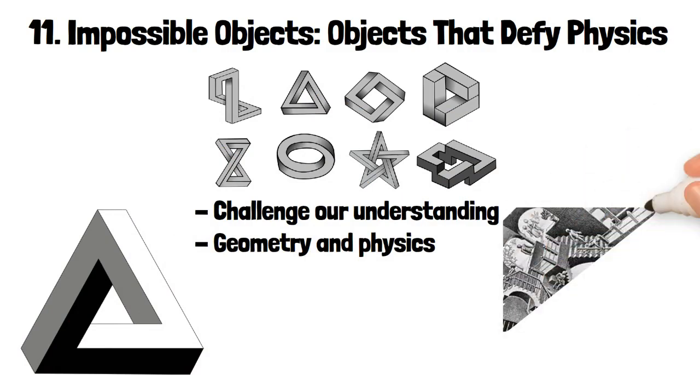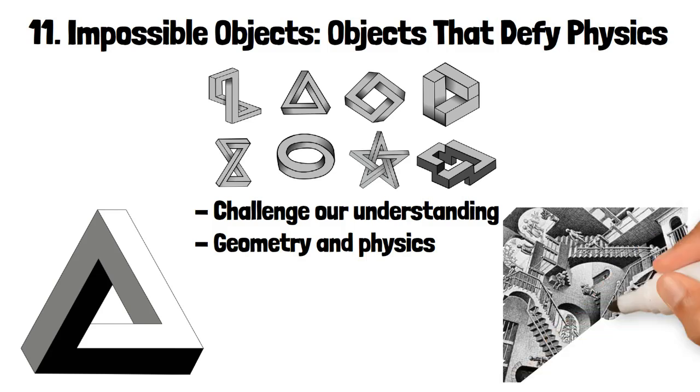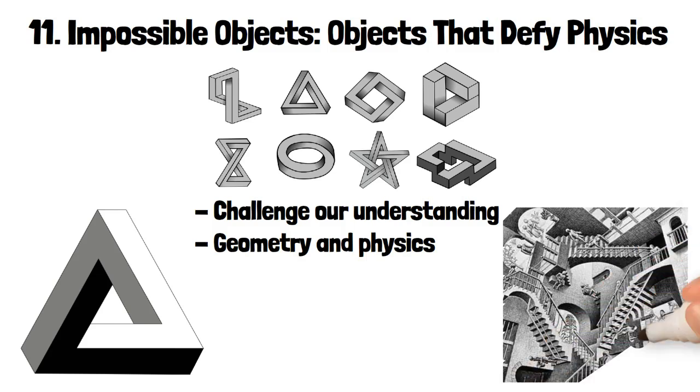Similarly, Escher's Impossible Stairs, or the Relativity Drawing, depicts stairs that seem to ascend and descend endlessly in a loop, creating a paradoxical structure.